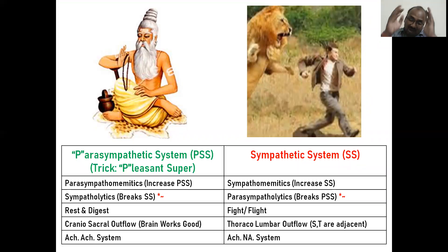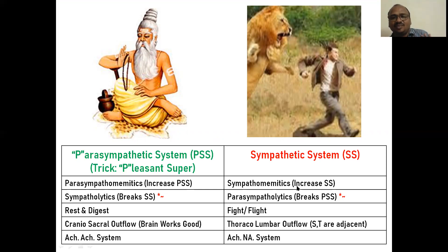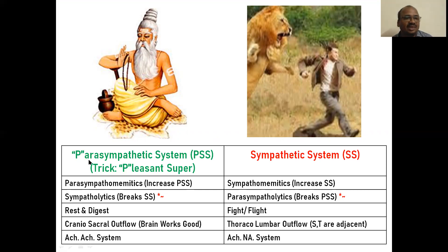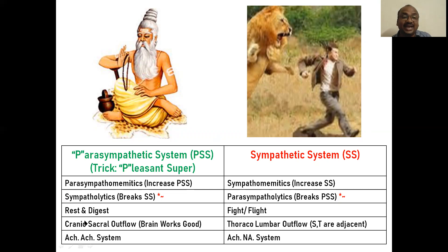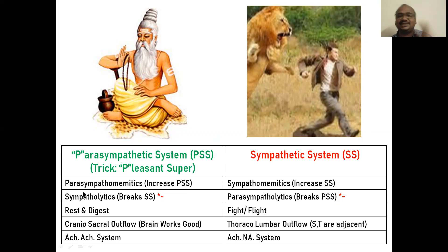What is the meaning of mimetic? Those drugs which increase the parasympathetic actions are called parasympathomimetics. Sympathomimetics means those drugs which increase the sympathetic system reactions. Sympatholytics — 'lytic' means break. When there is a breakdown of the sympathetic system, automatically the body will be shifted to the parasympathetic system. That's why most students are confusing. Sympatholytics means parasympathetic effect. Parasympatholytics means sympathetic effect.